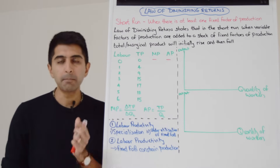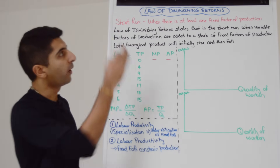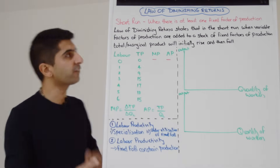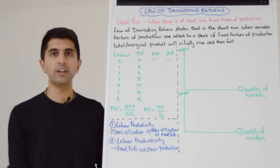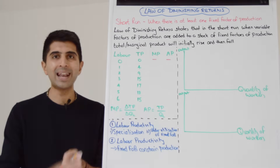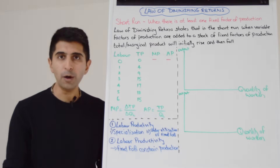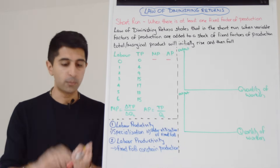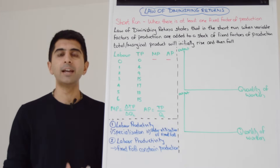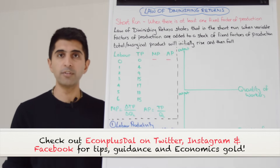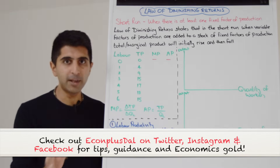Hi everybody. The law of diminishing marginal returns is a phenomenon that will affect the business in the short run, i.e. when there is at least one fixed factor of production. That's our definition of the short run: a period of time where there is at least one fixed factor of production. Normally capital and land are fixed for a business in the short run, and therefore the only way to increase output is to increase labor. And if we map numbers here as to what happens when businesses increase labor in the short run, we get a very interesting pattern that can be explained by the law of diminishing returns.